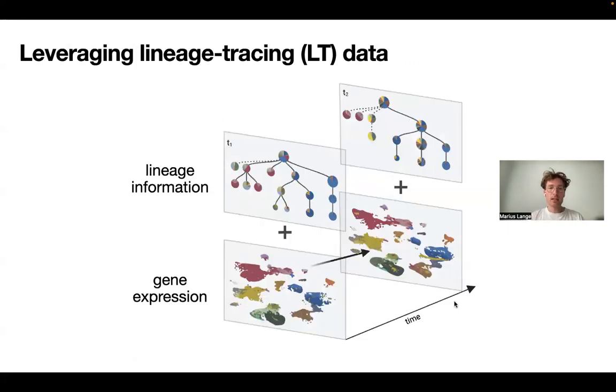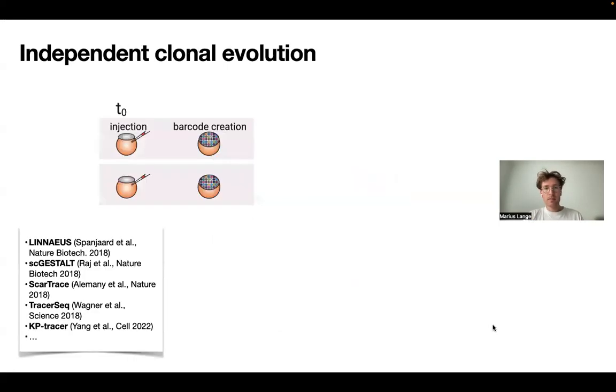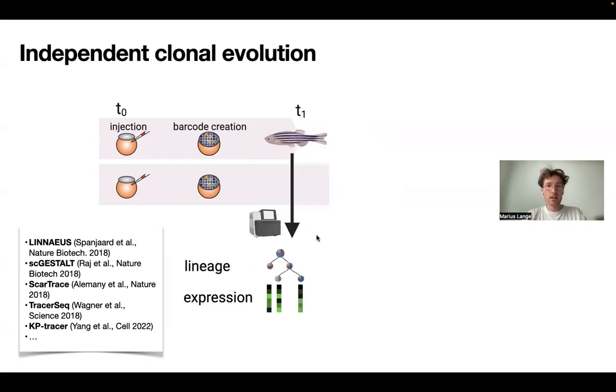Now in Moslin, the idea is to take this one step further and to incorporate additional lineage tracing information if you have it. And this can take the following form. We usually refer to this as independent clonal evolution. So say you start some sort of barcoding process in two different individuals. Often this is based on some evolving CRISPR-Cas system that inserts random mutations into a certain target loci that you have engineered.